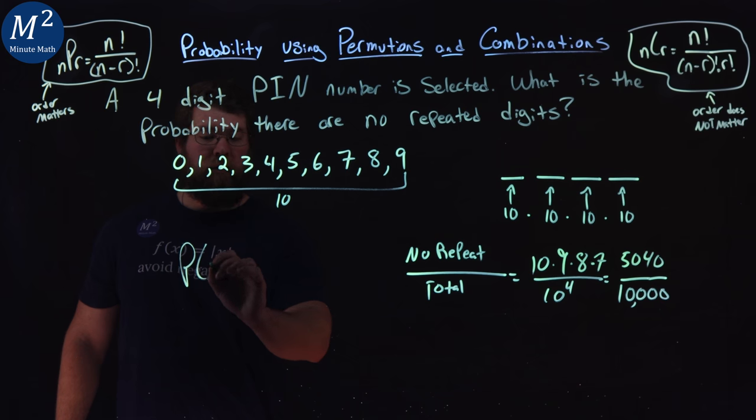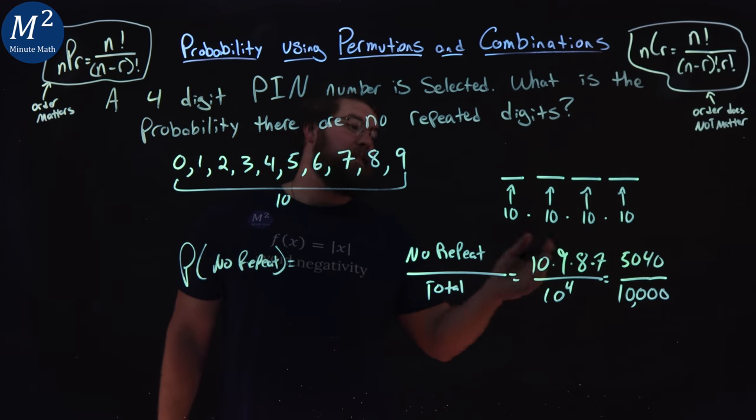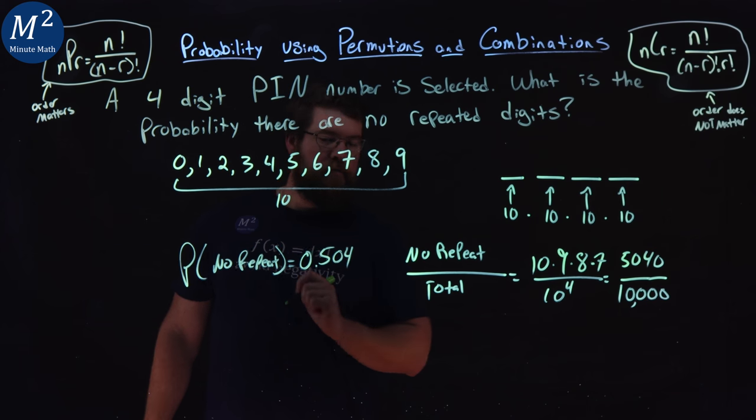the probability of no repeat is equal to 5,040 over 10,000, which is 0.504.